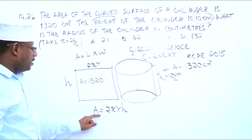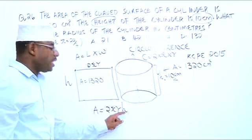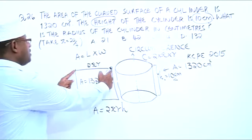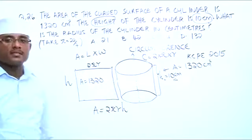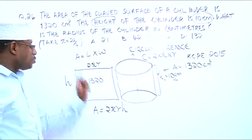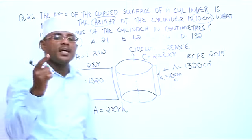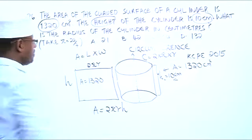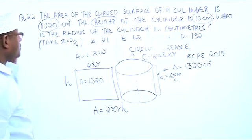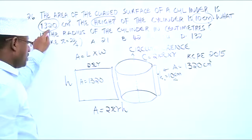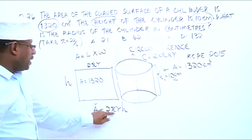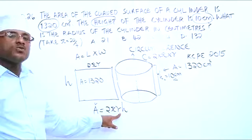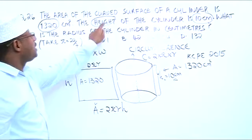So the area is equal to 2πrh. The question has already given us the area, which is 1320. We know pi — the question tells us to use pi as 22 over 7. We don't know the radius, and that is what we're looking for. We know the height, because the height is 10 centimeters.